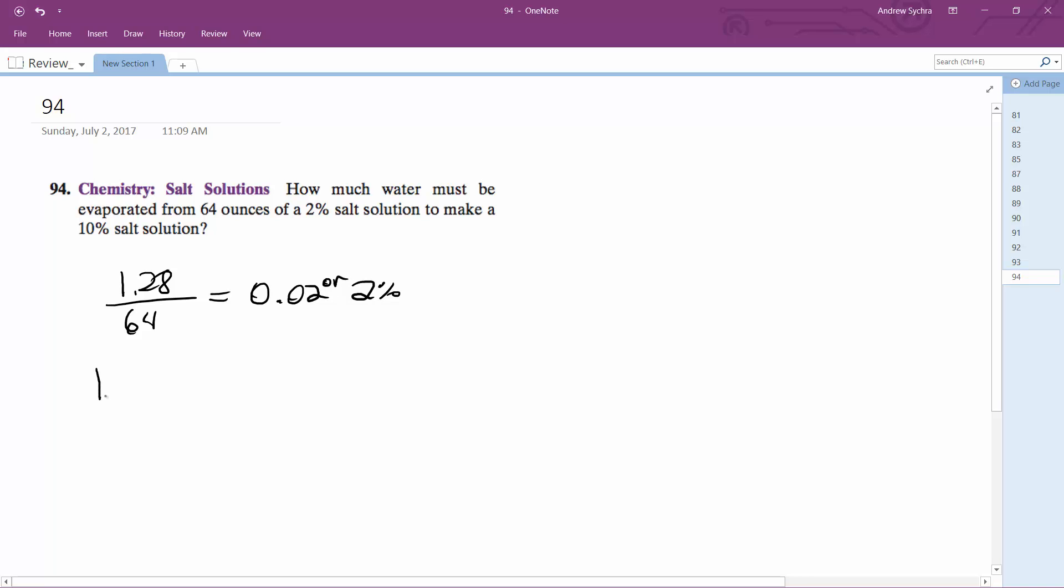In order to do this, I need to set up 1.28 over 64 minus x equals 0.1 or 10%. So 1.28 equals 0.1 times 64 minus x.